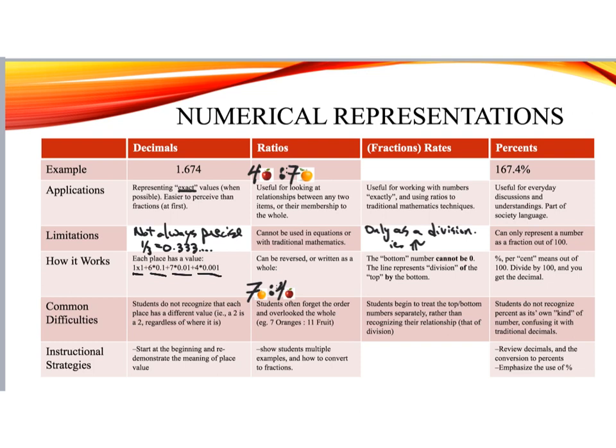Some common difficulty students have is they don't recognize that each place has a different value. Like, a 2 is a 2, and it doesn't matter where it is. So if we see the number 2.372, a student may not recognize that this first 2 is 2 ones, and the second 2 is 2 one-thousandths. So their value is actually quite a bit different, even though the number that we're looking at looks the same.